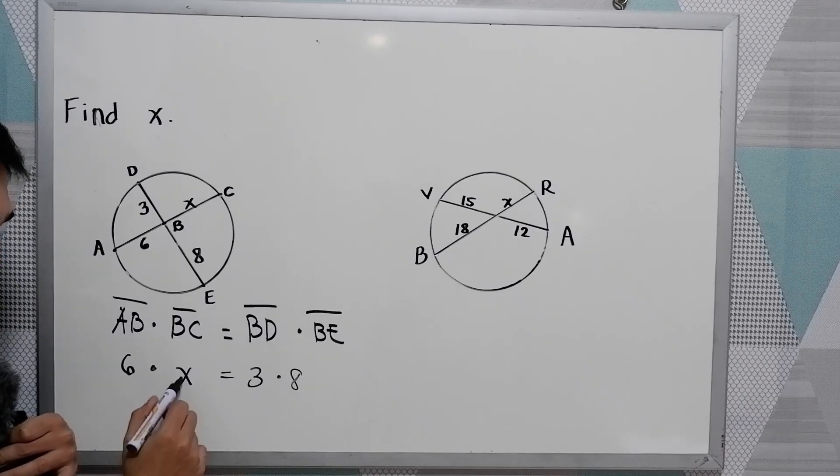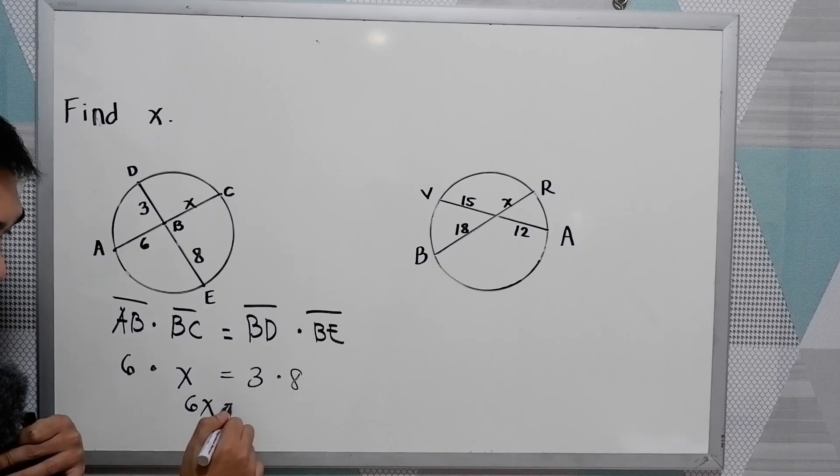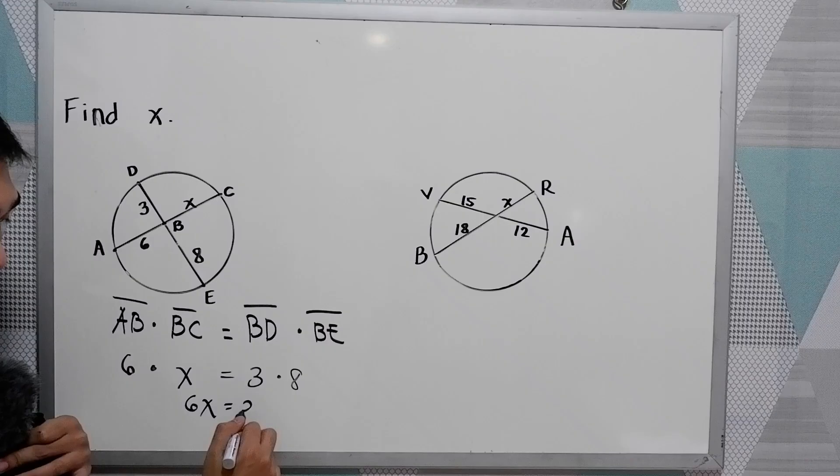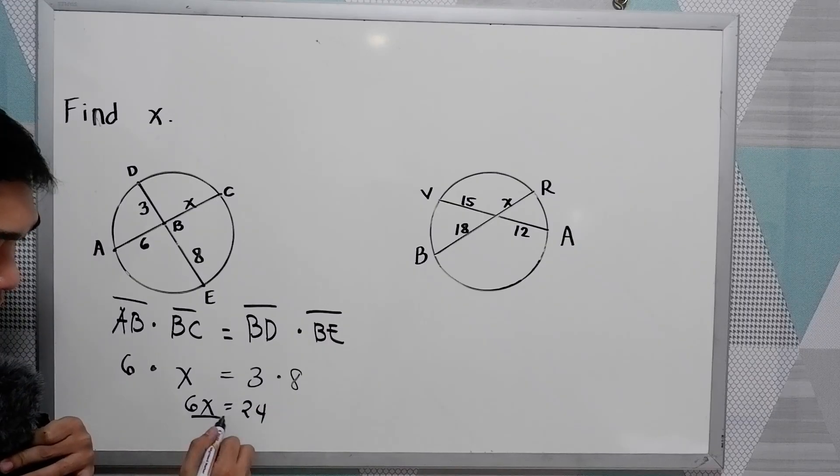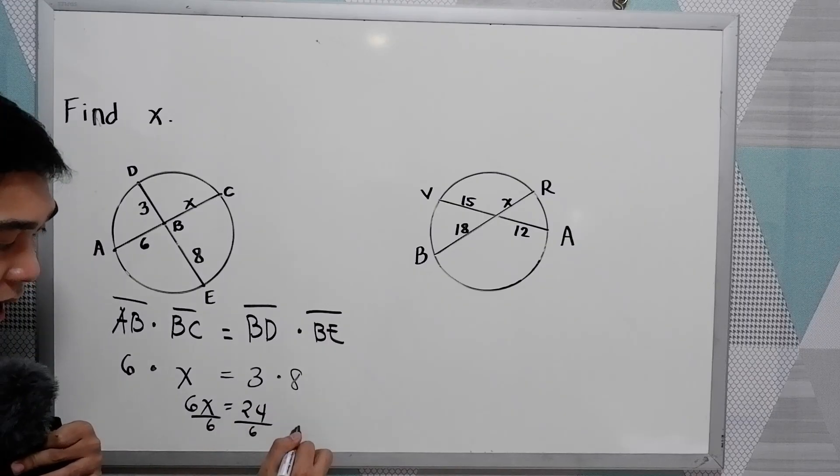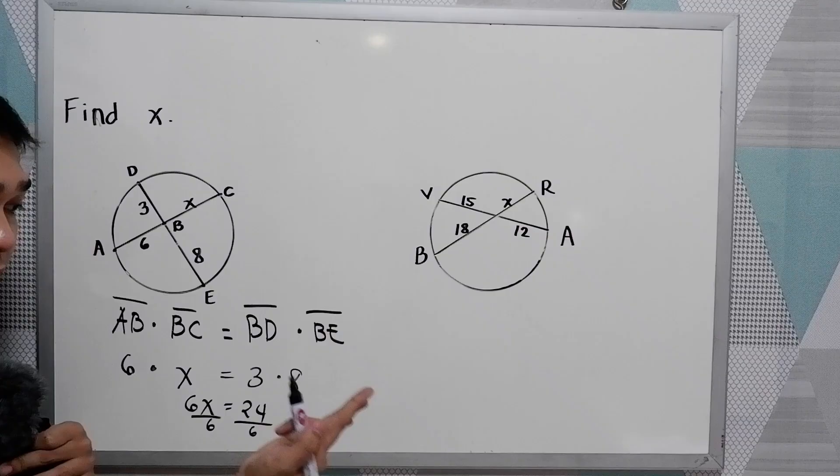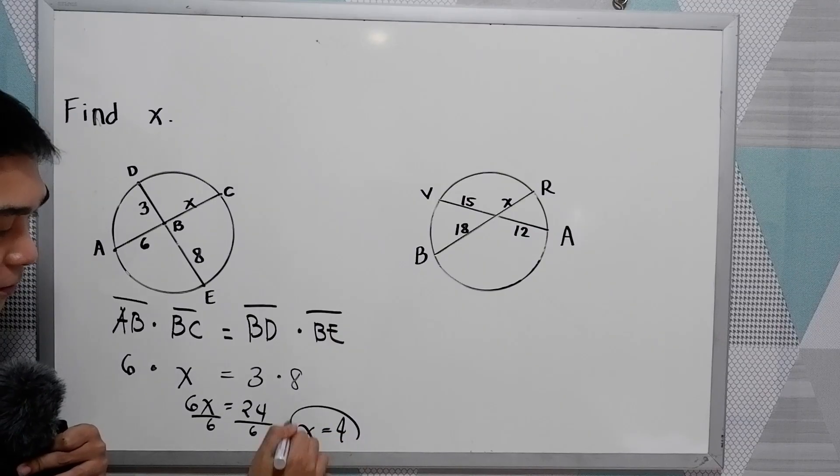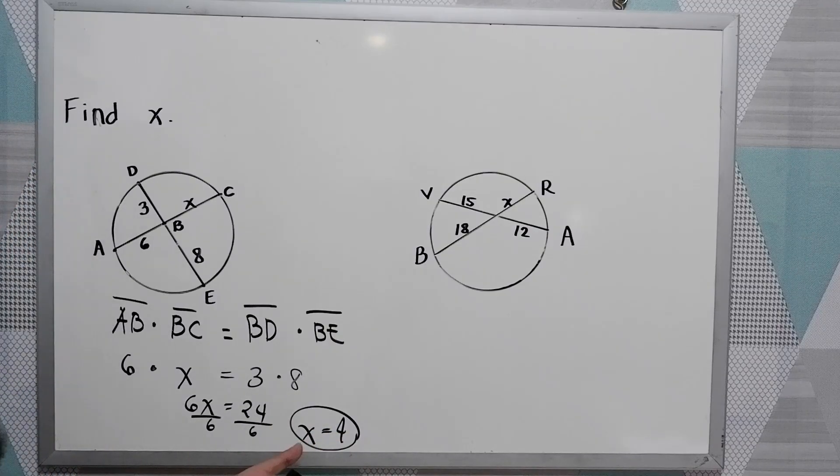6 times X, we have 6X, is equal to 3 times 8, 24. Divide by 6, X is equal to 4. That will be the value of our X.